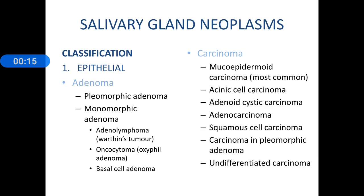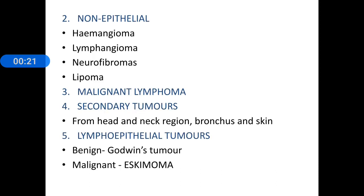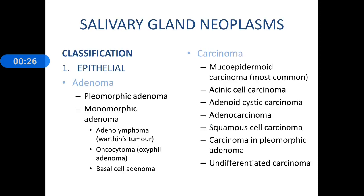The classification as approved by the WHO includes epithelial tumours, non-epithelial tumours, lymphoma, secondary tumours, and lymphoepithelial tumours. Under epithelial tumours we have benign conditions like adenoma — pleomorphic adenoma and monomorphic adenoma. Monomorphic adenoma may be of 2-3 types, of which the common type is Warthin's tumour or adenolymphoma. You can also have an oncocytoma and a basal cell adenoma.